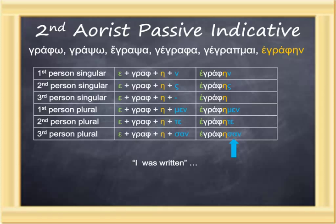Translated, somewhat awkwardly here: I was written; you singular were written; she, he, or it was written; we were written; you plural were written; they were written. Obviously, it's the third person form, singular or plural, that shows up in the New Testament.